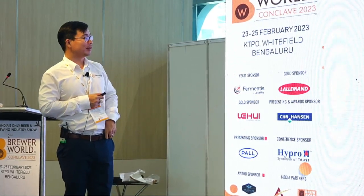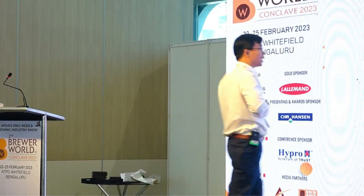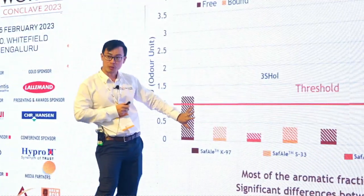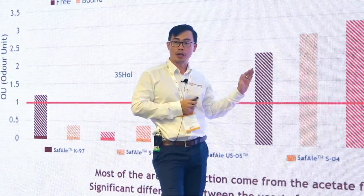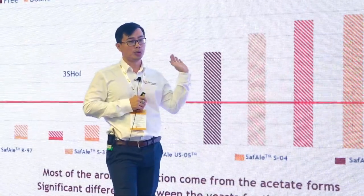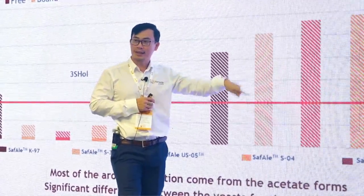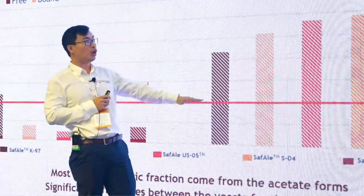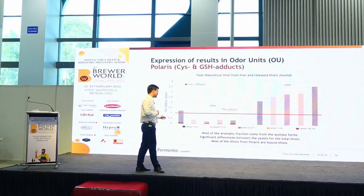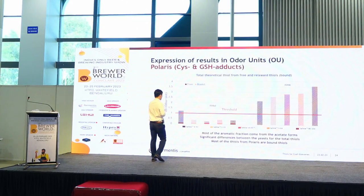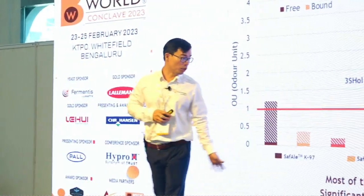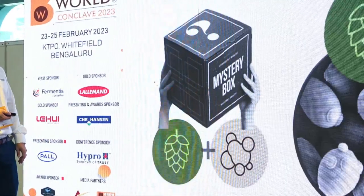For Polaris: the striped bars represent the bound form that has been released — you can see there is not much free thiol available in the hop itself, but the yeast helps you release a lot more. The striped portions show the releasing contribution. This results in a much higher other-unit value. Conclusion: aromatic fractions from Polaris mostly come from the acetate form, and there are significant differences between yeast strains for total thiol release. K97 shows the strongest releasing rate among all five yeasts tested.